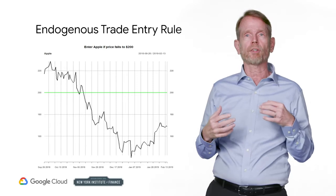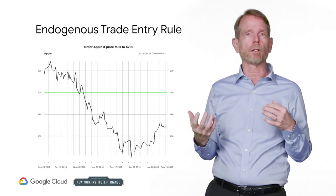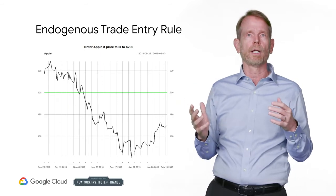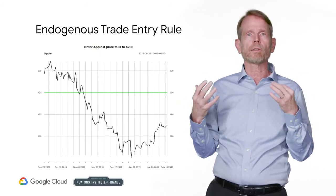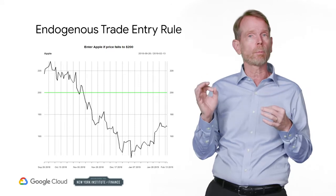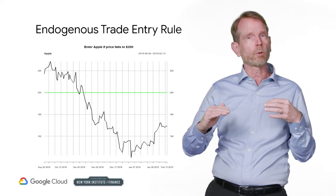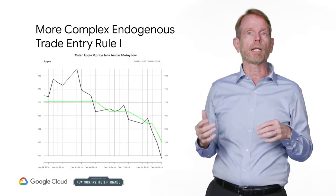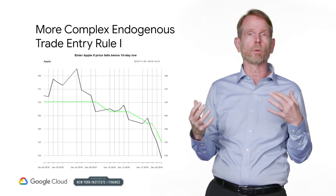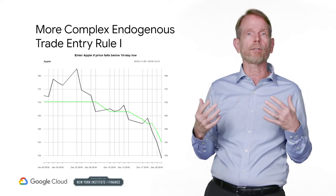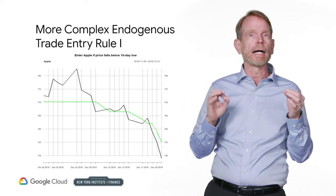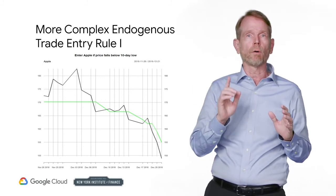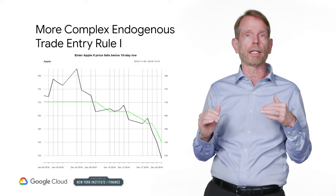For example, you might say: buy Apple if the price goes below $200. This rule requires you only to watch Apple's share price. Naturally, you will need to have a real-time feed to observe the price of Apple, and when Apple trades below $200, you submit a buy order. You can stipulate more complicated endogenous rules — for example, buy Apple if the price hits a 10-day low. Again, this rule requires you only to watch Apple, but you also need to have an up-to-date record of the 10-day low.